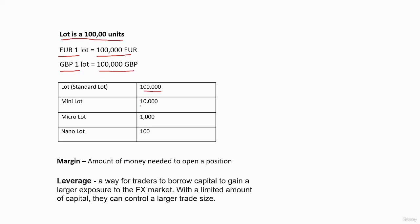A mini lot is 10,000 units and a micro lot is 1,000 units. We can write mini lot as 0.1 lot, and micro lot as 0.01 lot.